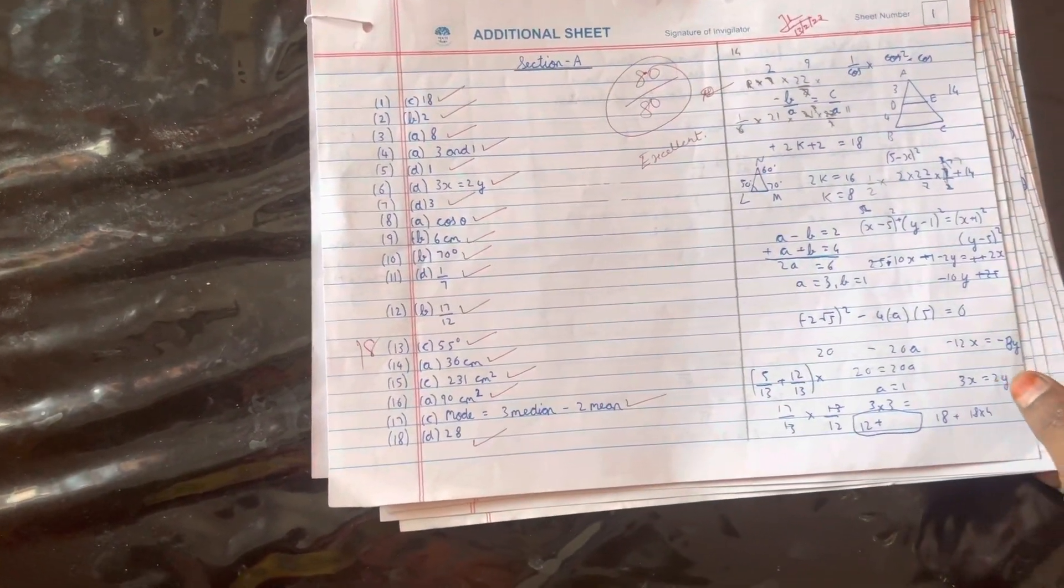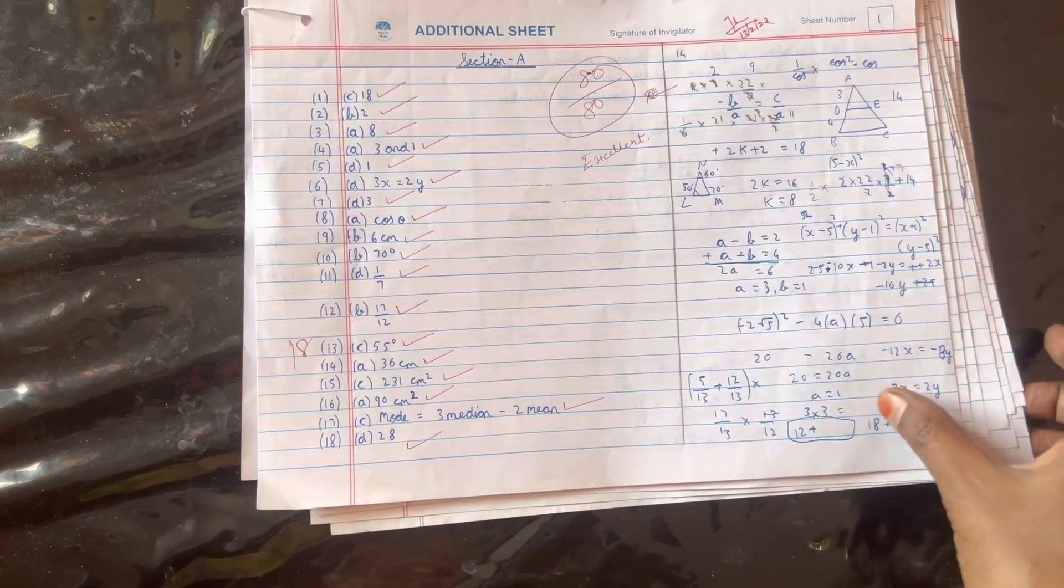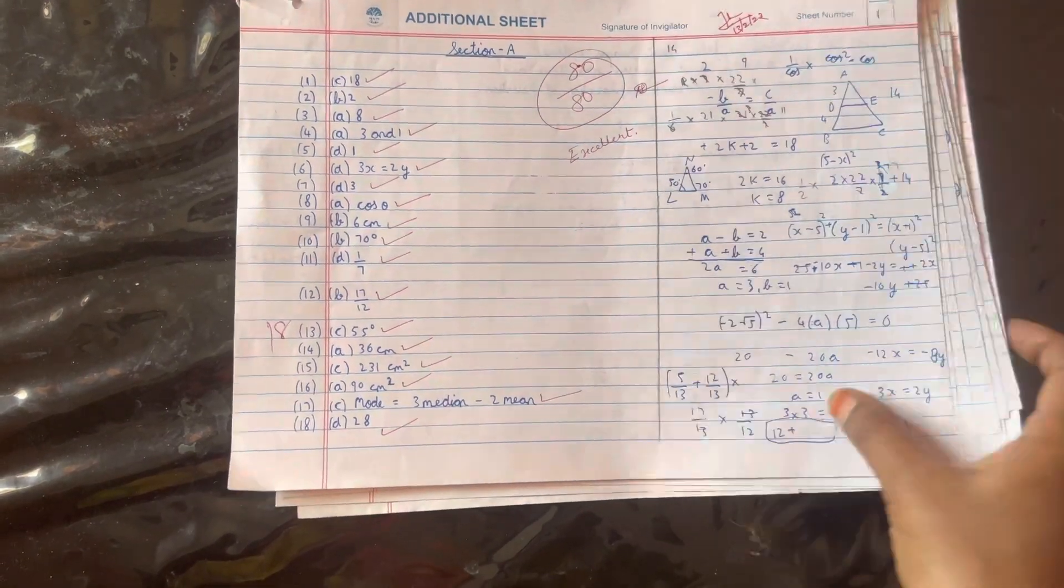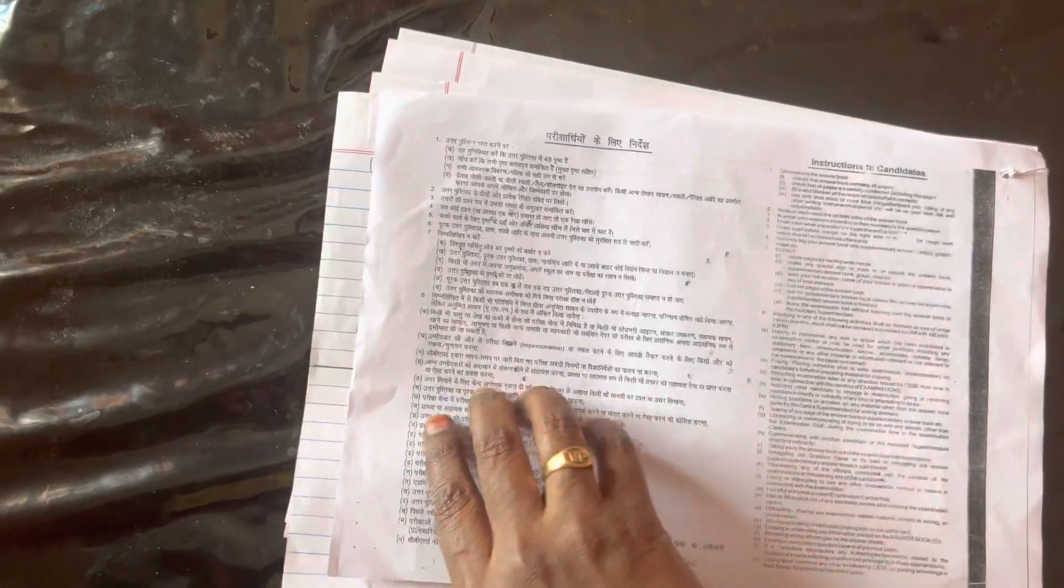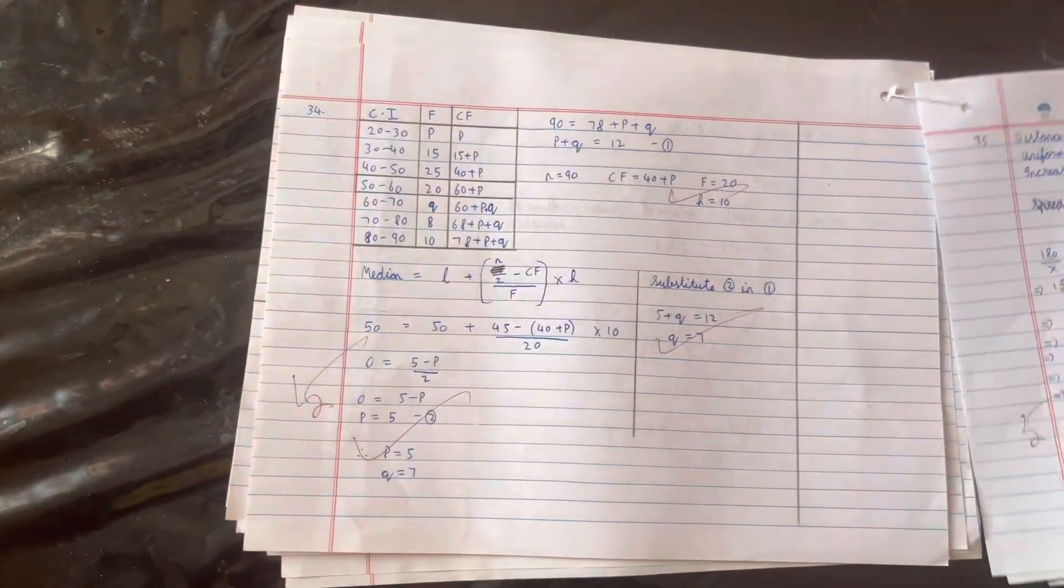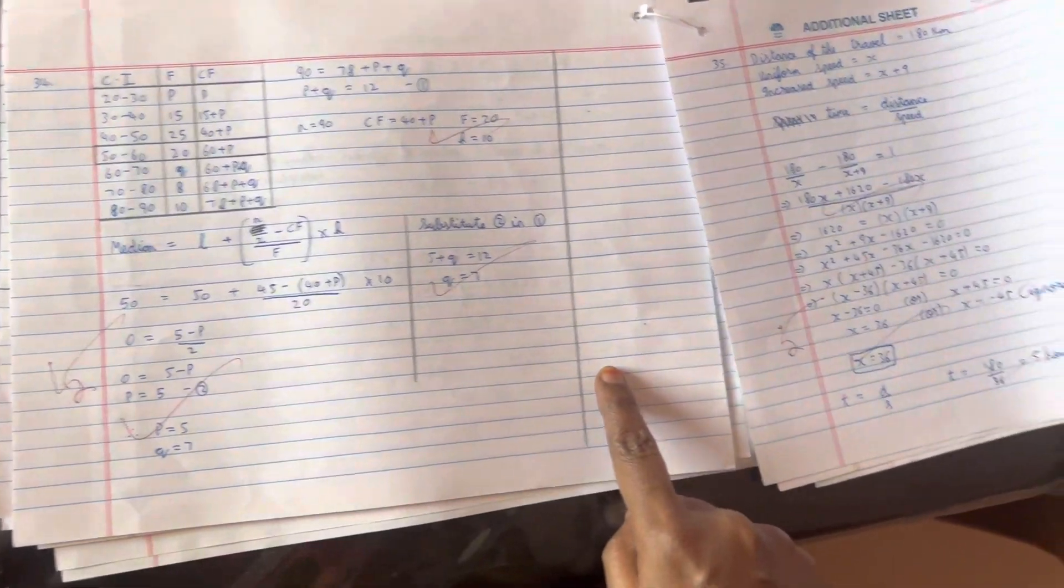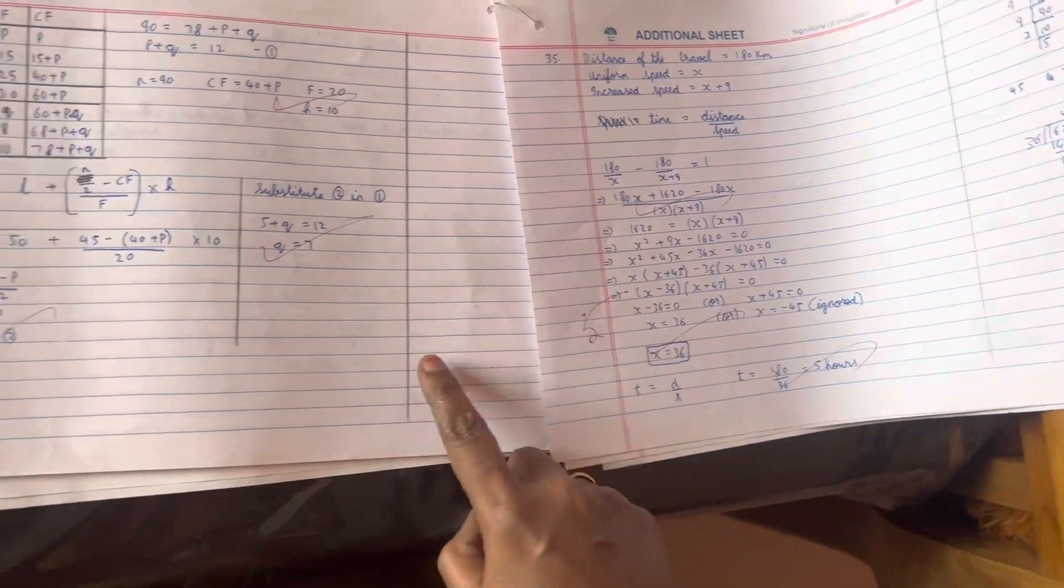You can also take separate rough papers and do all the rough work there and then attach it. That's not wrong. He's done it parallelly. See, everywhere what he's done is he's drawn a separate rough column where he is going to do all the rough work.